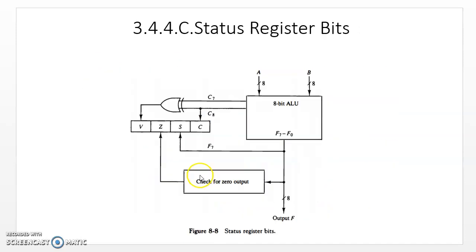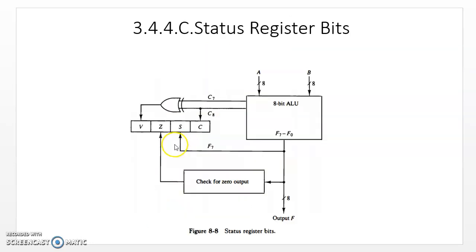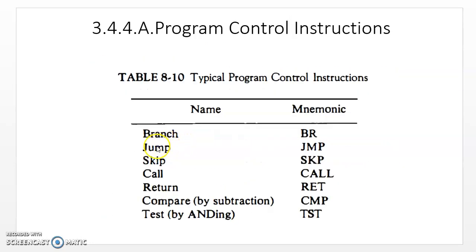There are 20 branch instructions, such as: branch if zero, branch if not zero, branch if carry, branch if not carry, branch if plus, branch if minus, and many more. Branch and jump instructions are used interchangeably — they both mean the same thing. The only difference is they are used in different addressing modes. These instructions can change the execution sequence of the program by changing the address content of the program counter. They come along with their own addresses, and that address is stored into the program counter to change the execution sequence.